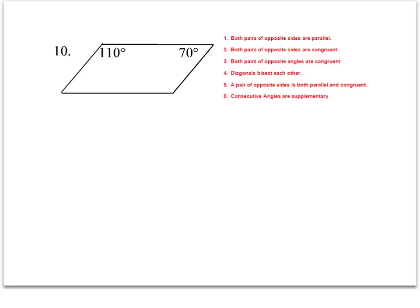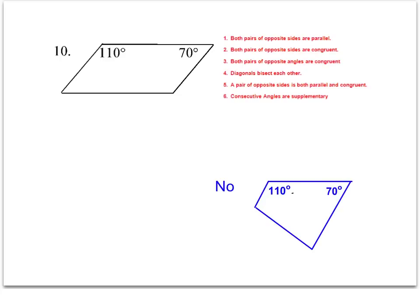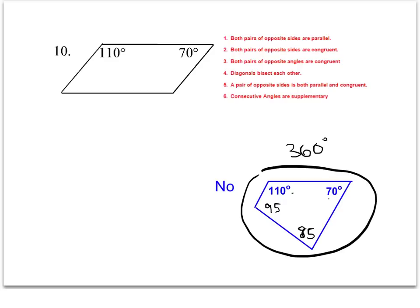Number ten gives us information about angles, but only two of them — we don't know the value of the other two. We can assume they are 110 and 70, but unless we know for sure, we can draw a counterexample showing something else. So we do not have enough information. I'll draw a picture with the 110 and 70 angles, but where the other two angles — say 85 and 95 — clearly do not create a parallelogram. Those four angles still add up to 360 and form a valid quadrilateral, but it is clearly not a parallelogram.